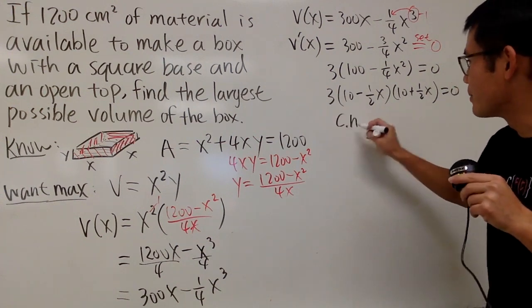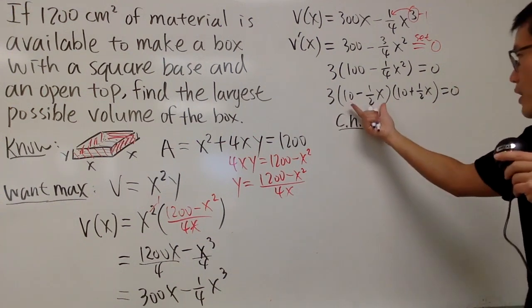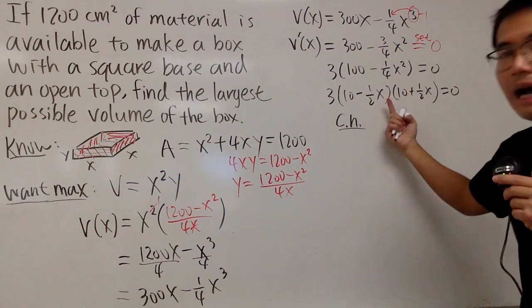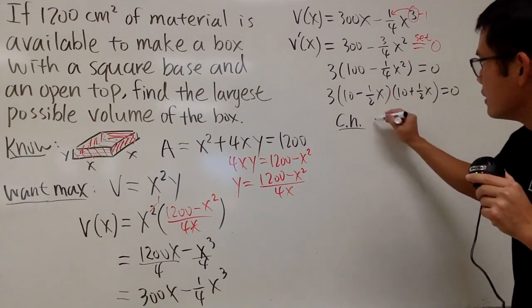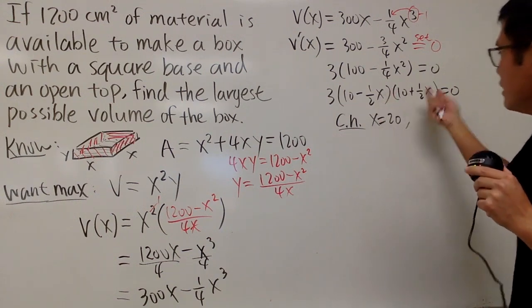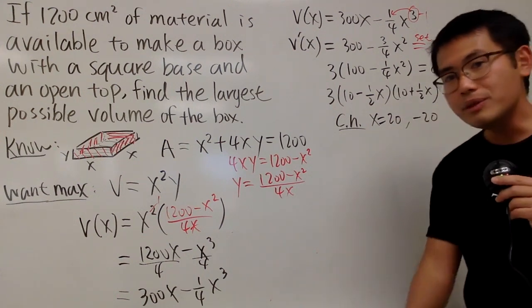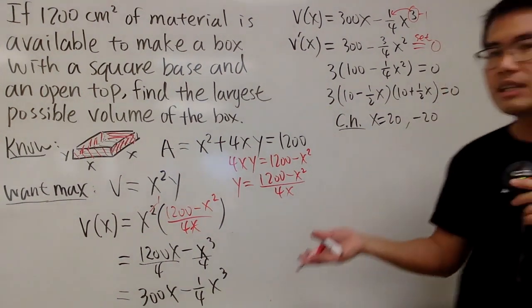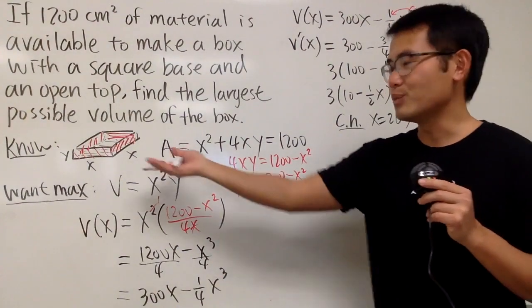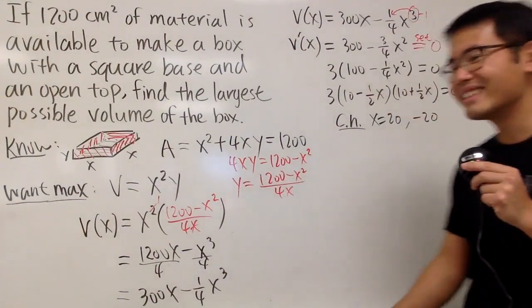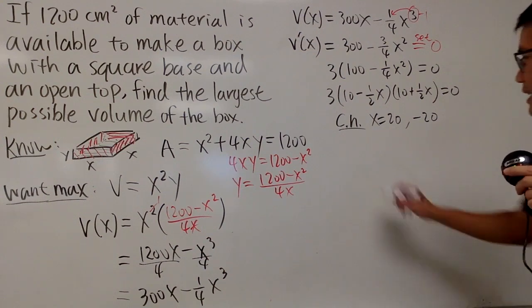Anyway, here are the critical numbers. We have two of them. This right here, of course, you have to have x equal to 20. So I will just write that down. And the other one, this is going to give us negative 20. But the truth is, negative 20 doesn't even make sense in our situation, because we are talking about the length of the box. So you don't really have to worry about that.